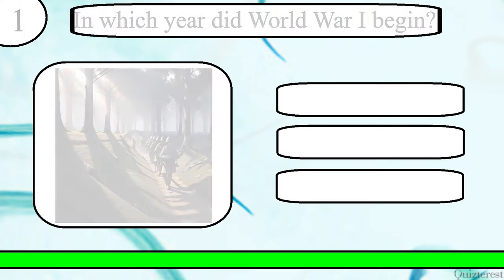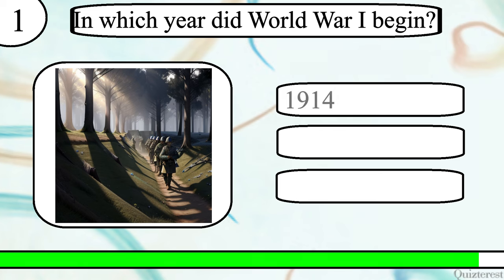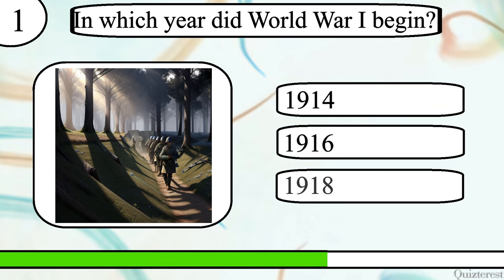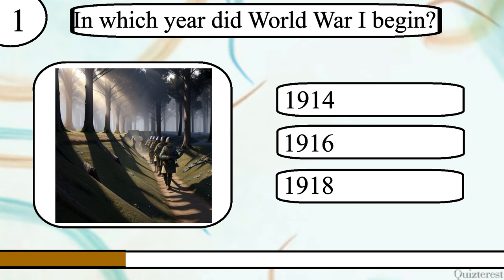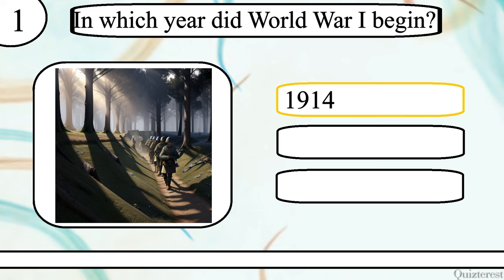Question 1. In which year did World War I begin? 1914, 1916 or 1918? The correct answer is 1914.